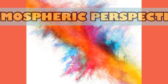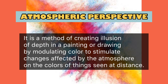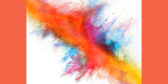Next, we have atmospheric perspective, also called aerial perspective. It is a method of creating the illusion of depth in a painting or drawing by modulating color to simulate changes affected by the atmosphere on the colors of things seen at a distance. In atmospheric perspective, colors are used to indicate which elements are nearer or farther, giving an illusion of depth on a two-dimensional surface. In linear perspective, lines converge toward the center, while in atmospheric perspective, color is used to emphasize distance.